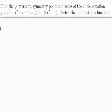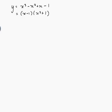So let's do the y-intercept first. The y-intercept happens on the y-axis when x is 0. So if x equals 0, y is equal to 0 cubed minus 0 squared plus 0 minus 1, which is minus 1. So the y-intercept is minus 1.